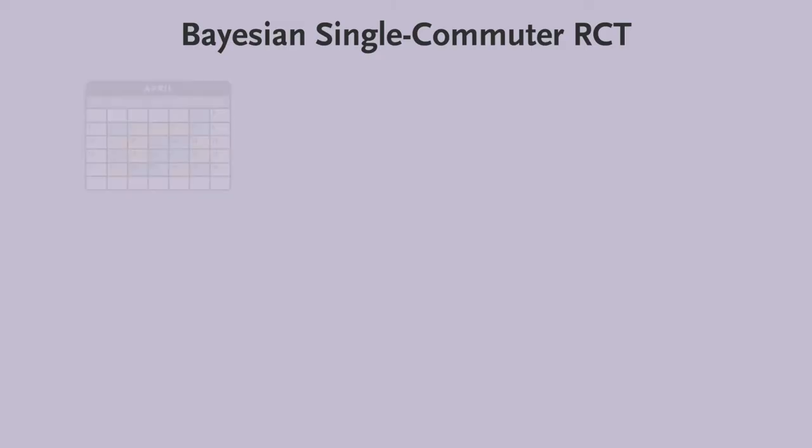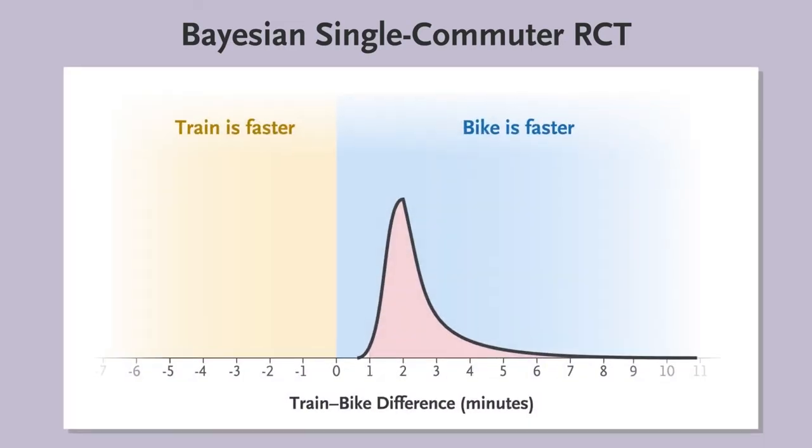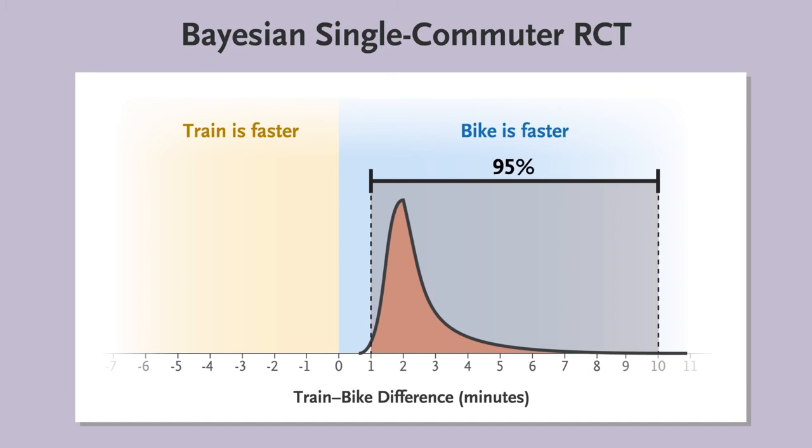After compiling a year's worth of data, you calculate that there's a 95% probability that biking is faster than taking the train, and that the 95% credible interval runs from biking being 1 minute faster to 10 minutes faster.